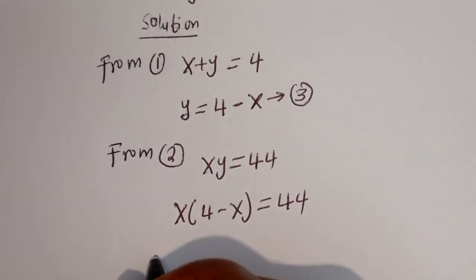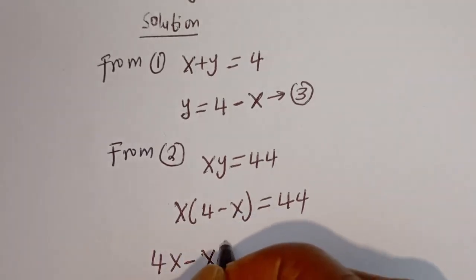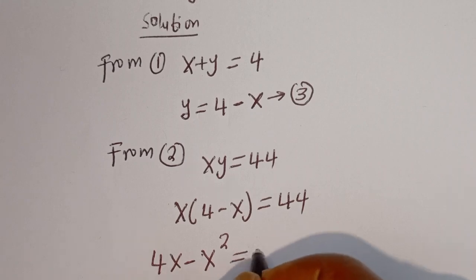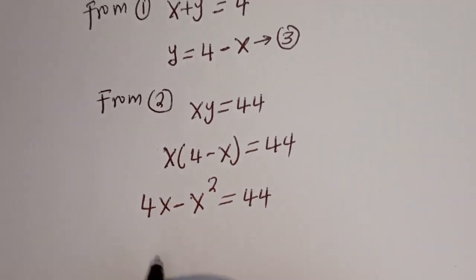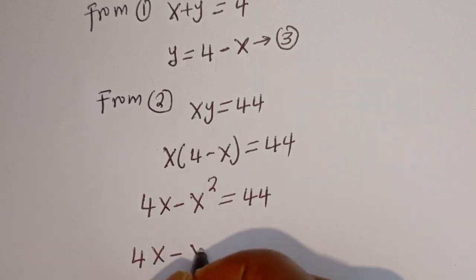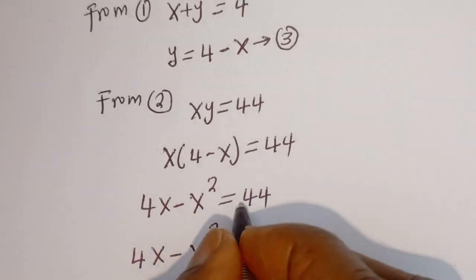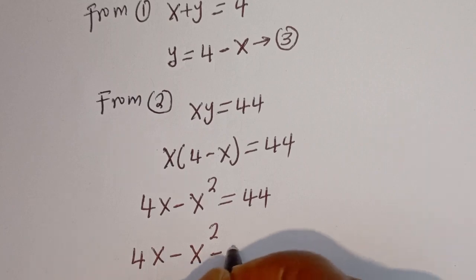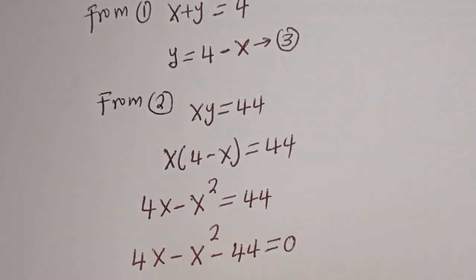Let's open this bracket: we have 4x minus x squared is equal to 44. Bringing 44 to this side, it becomes minus 44, and the equation equals 0.